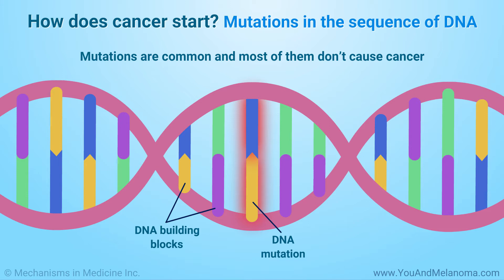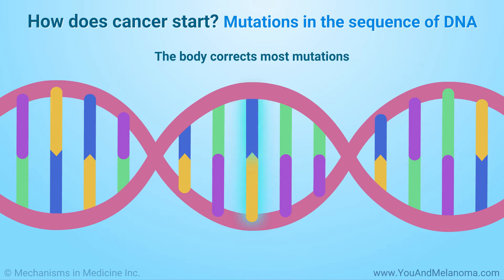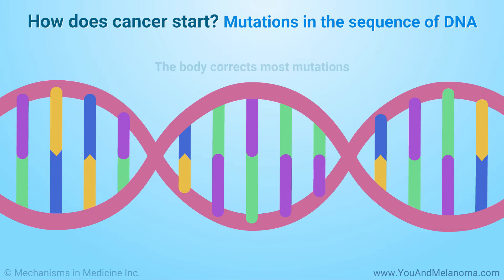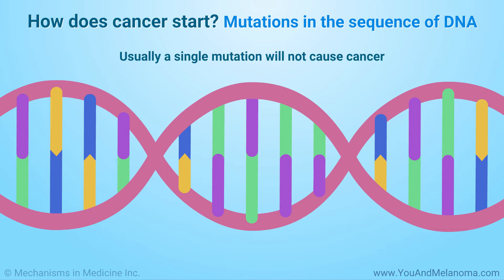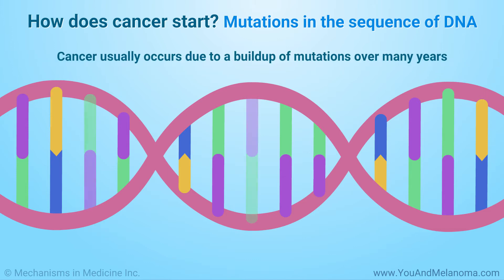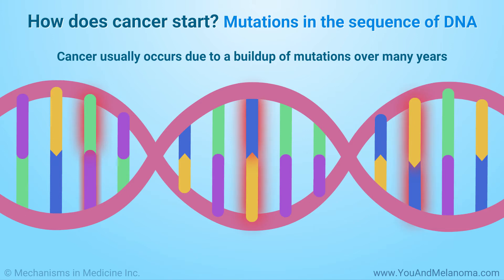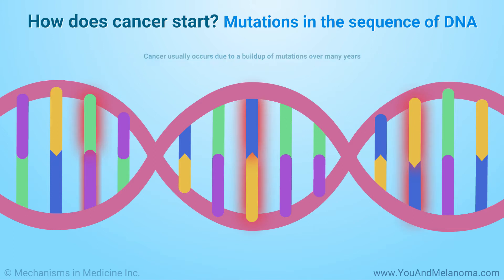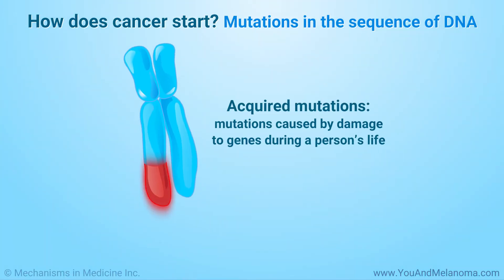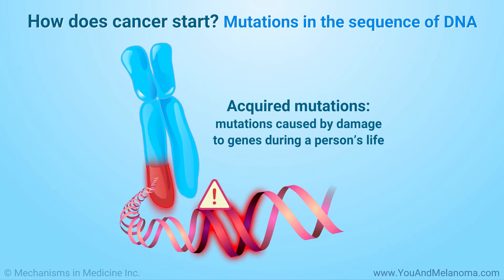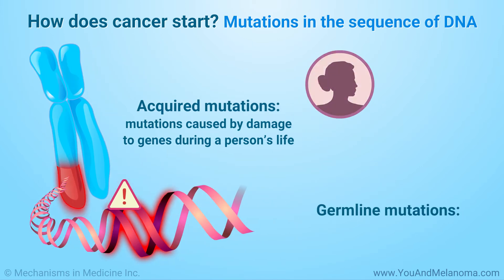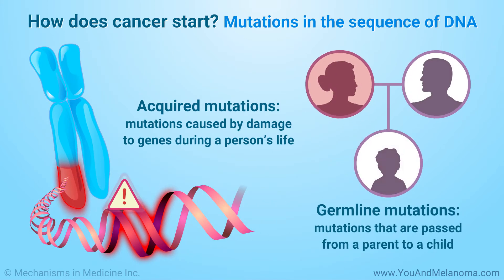Mutations are common, but most of them don't cause cancer. The body corrects most mutations, and usually a single mutation will not cause cancer. Cancer usually occurs due to a buildup of mutations over many years. Most mutations are caused by damage to genes that happens during a person's life — these are the most common cause of cancer. In rare cases, mutations are passed from a parent to a child, and these mutations can cause cancer to run in families.